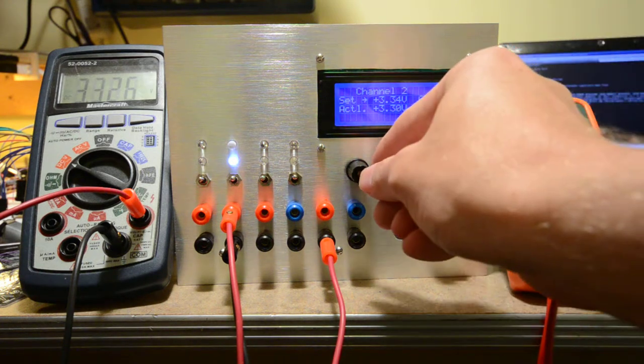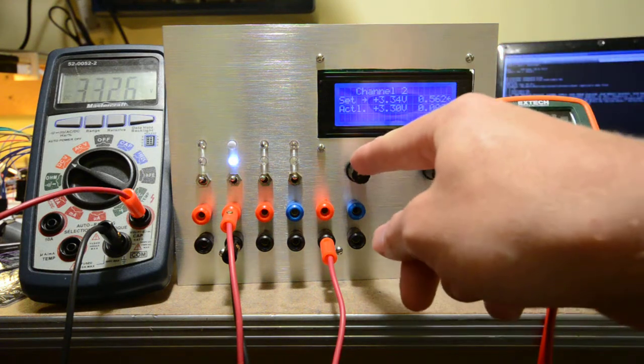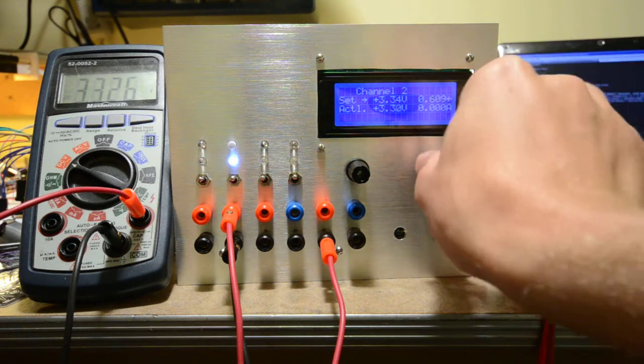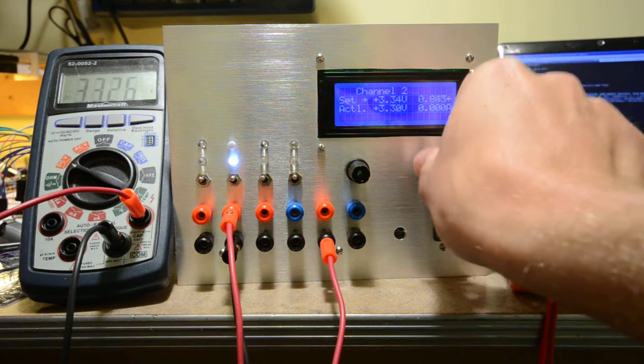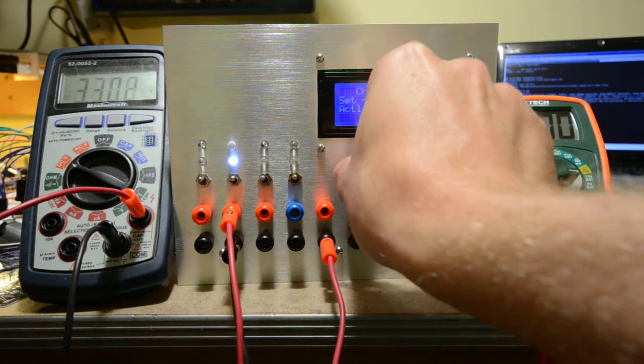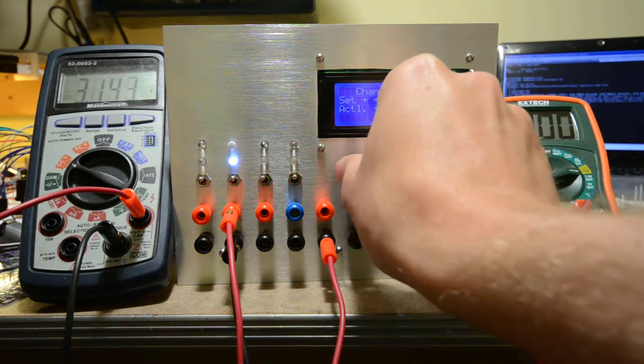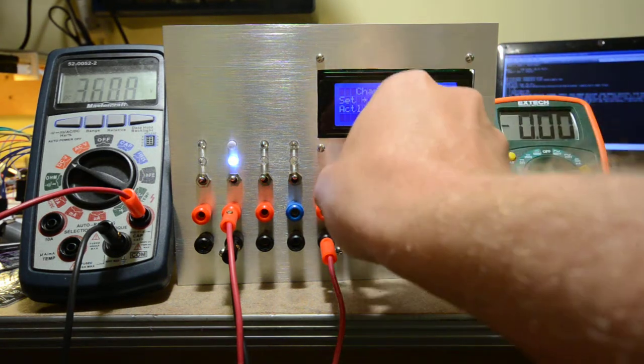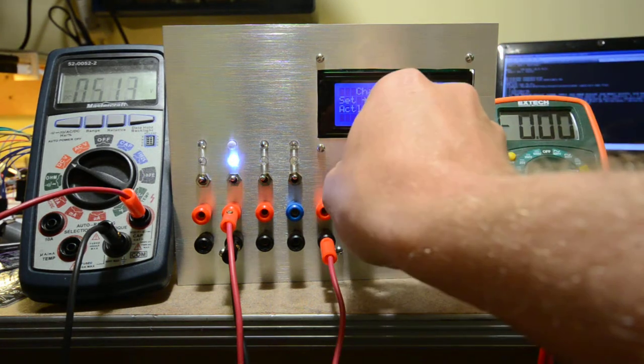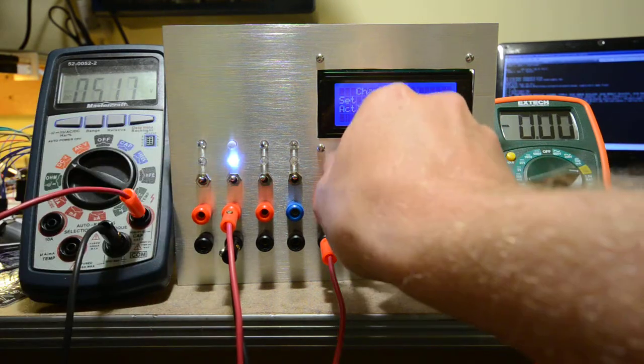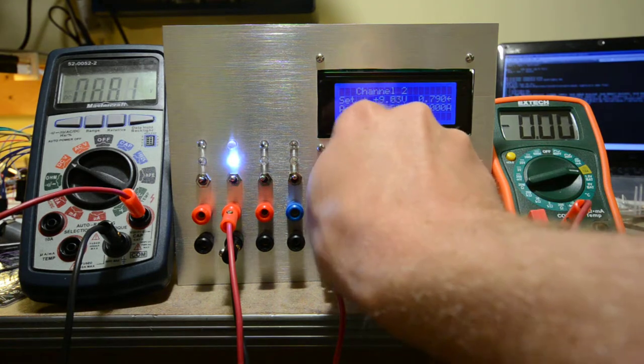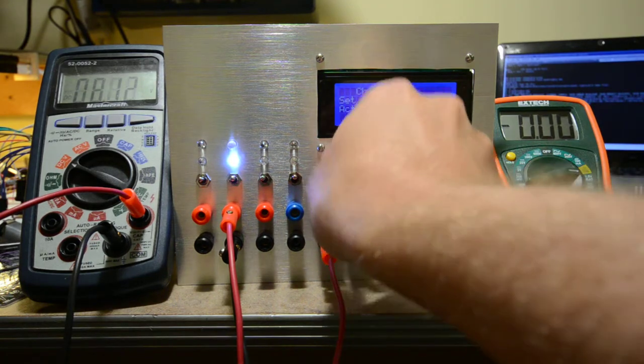The setpoint voltage and setpoint current can be adjusted as you can see here. As the voltage is changed, the multimeter immediately updates and the light there can also be seen to get brighter and dimmer.